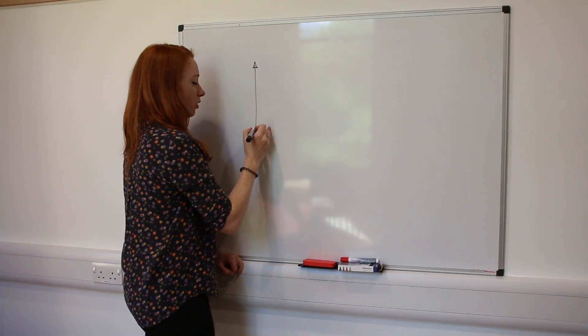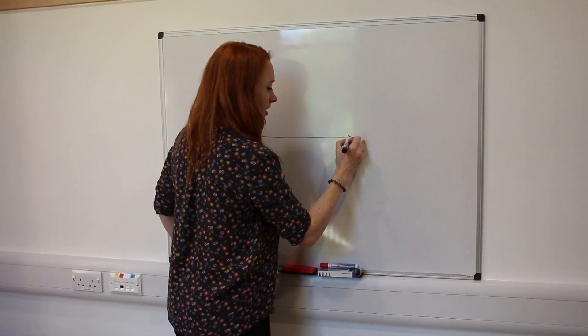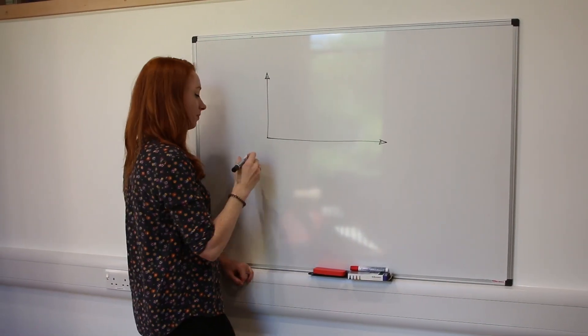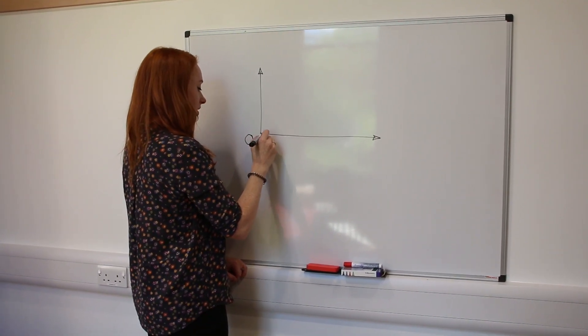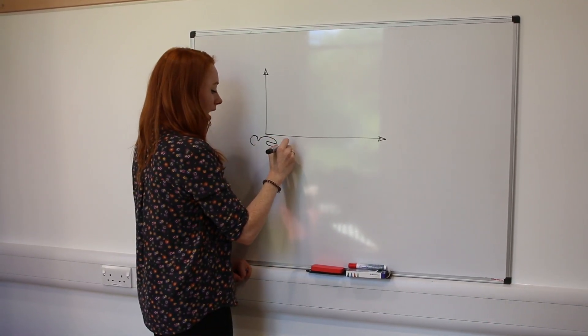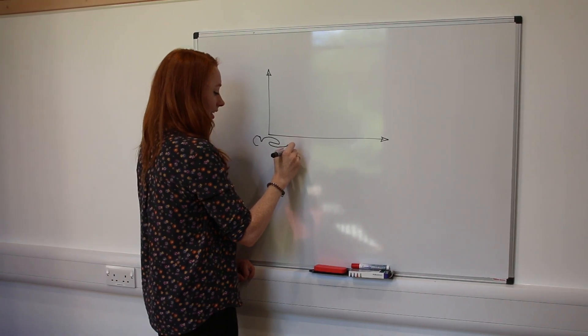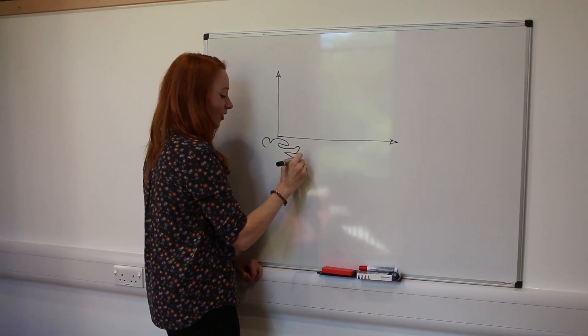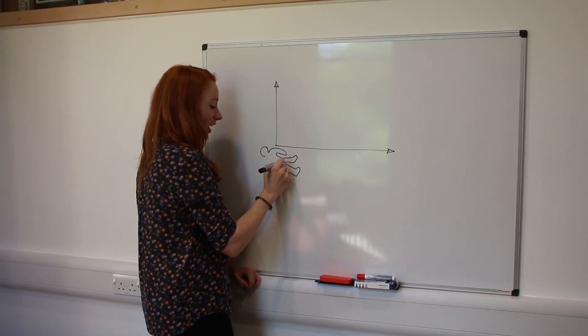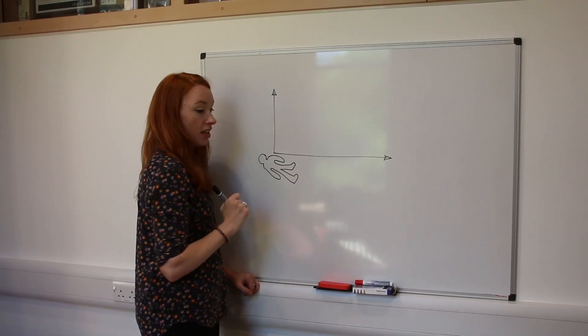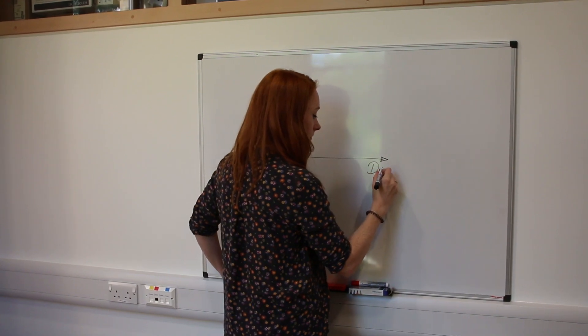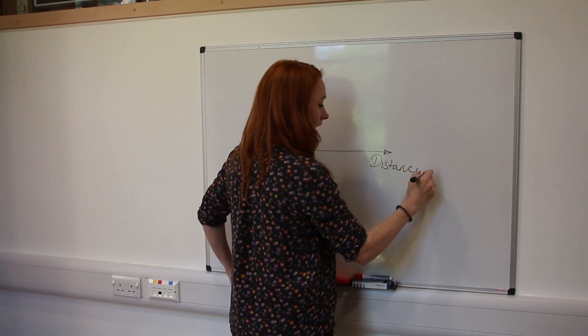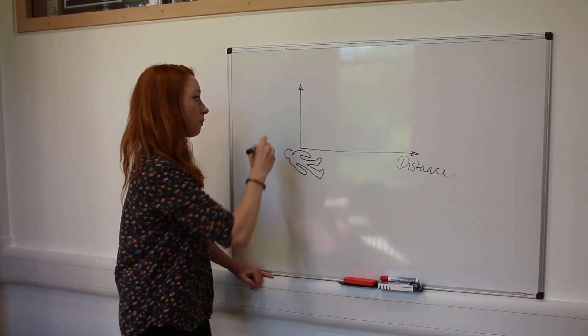Now if you're the police and you're trying to catch the serial killer, you can think about how far away - I'm trying to draw a dead body here - how far away your serial killer is going to live from the victim that you've just found. And you can think of this in terms of distance and you can think of it in terms of probability.